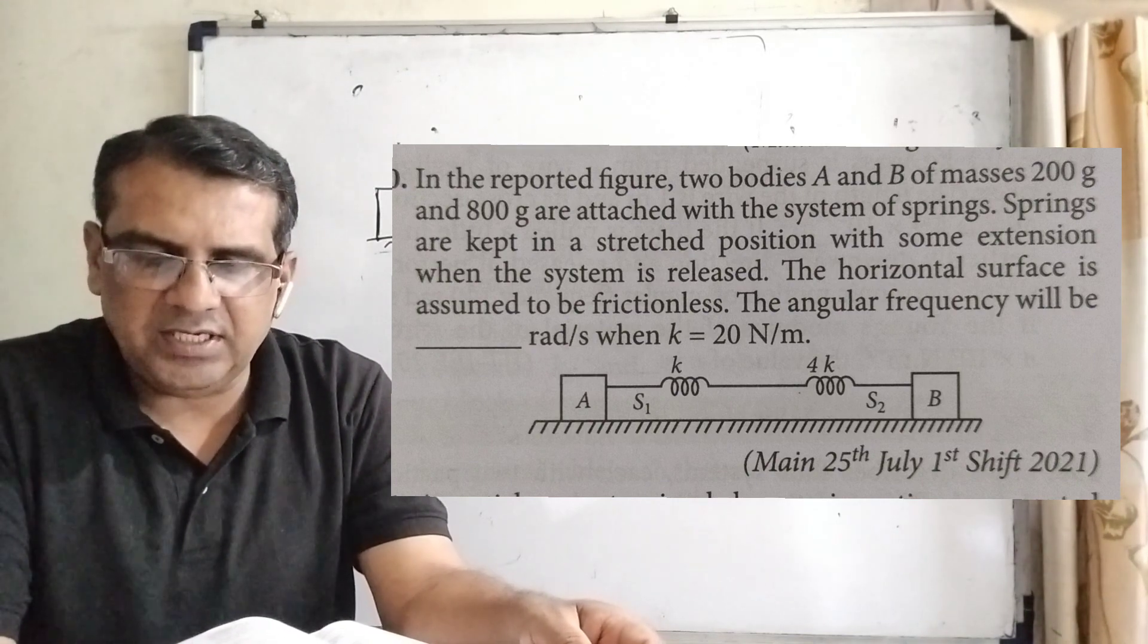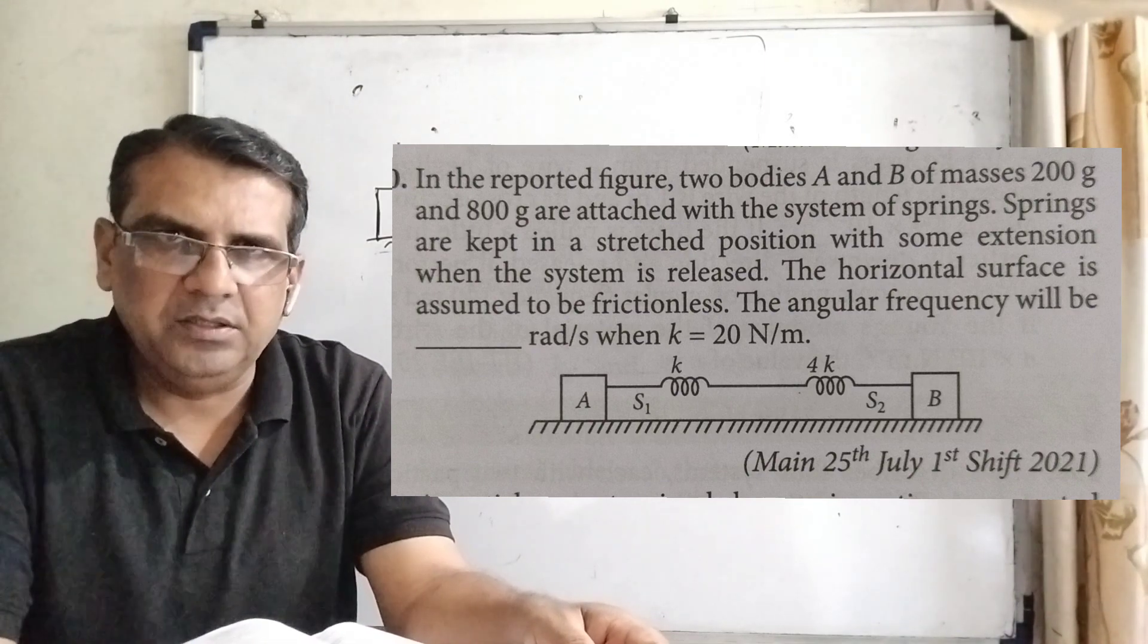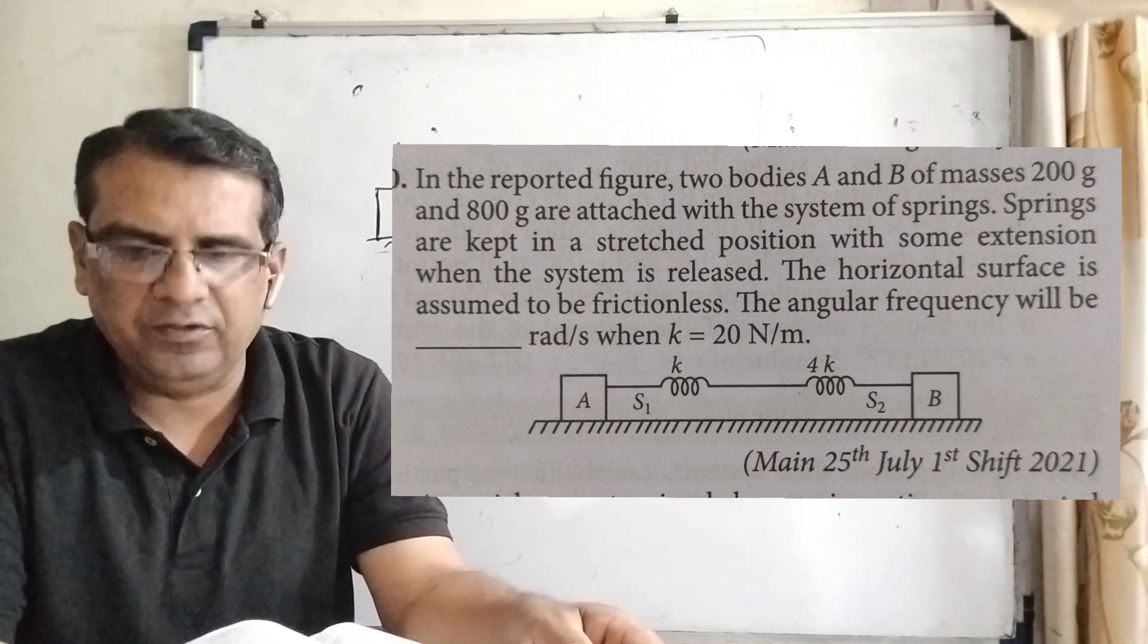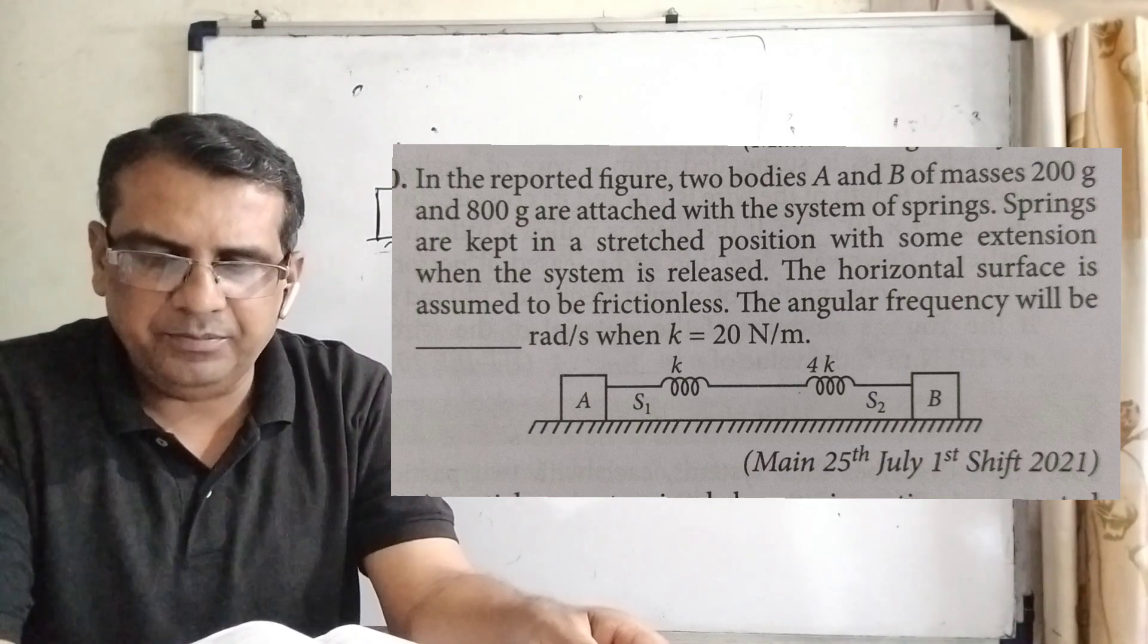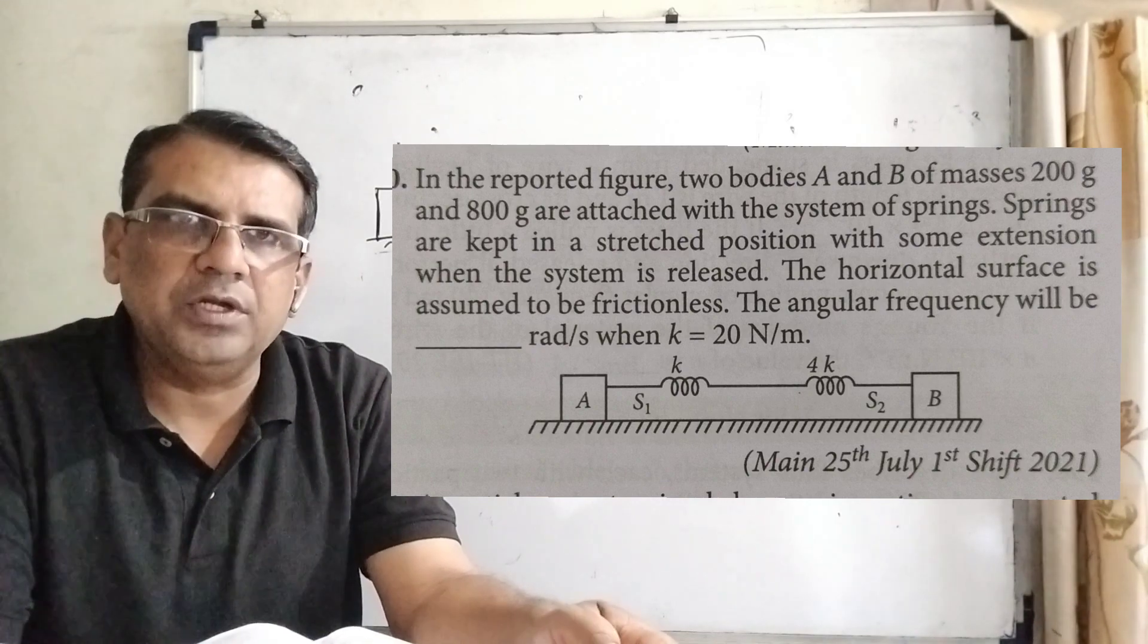The horizontal surface is assumed to be frictionless. We have to find out the angular frequency in radian per second, and k is given as k equal to 20 Newton per meter.